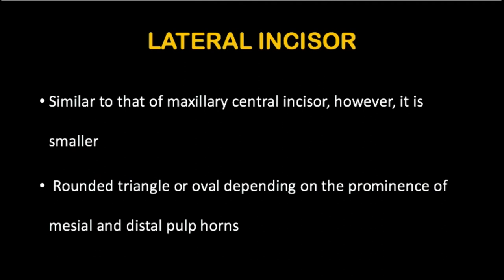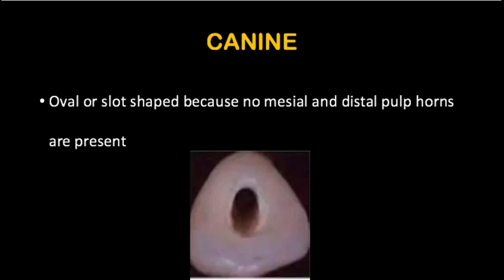Coming to the lateral incisor: the access opening of the lateral incisor is almost similar to that of the maxillary central incisor, however the access opening is much more smaller. The access opening of the lateral incisor is also a rounded triangle or oval depending on the prominence of the mesial and distal pulp horns. Coming to the canine: the access opening of the maxillary canine will be in the shape of an oval or slot shape, because there will be no mesial and distal pulp horns present. So basically your canine will have an oval-shaped access opening.